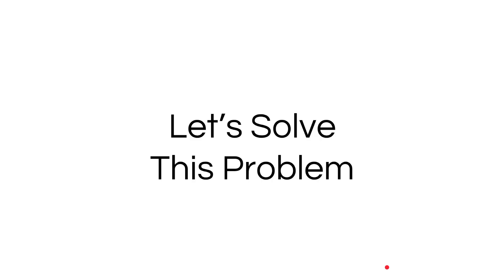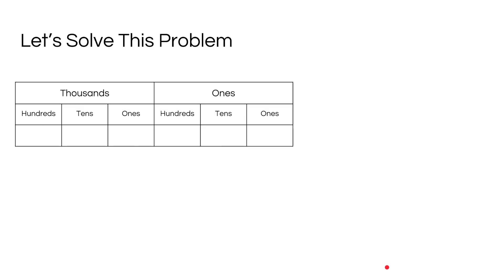So let's solve this problem. Like the last lesson, we're going to use a place value chart. So let's put the number 572,914 in here. There we go.